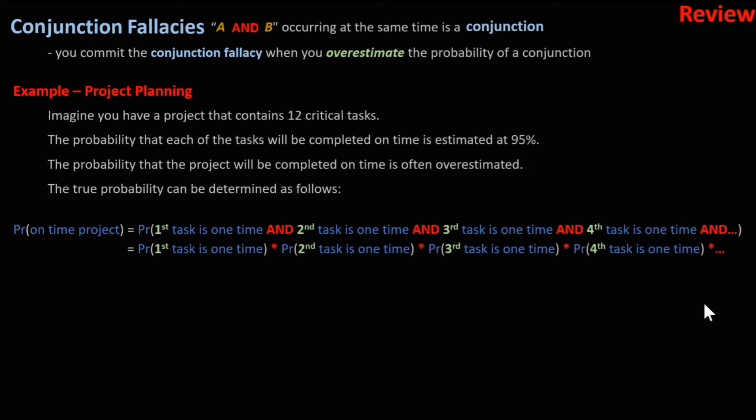Using the AND rule, we have to multiply these probabilities. So this becomes the probability that the first one is on time multiplied by the probability of the second one and so on. We can substitute in our 0.95.